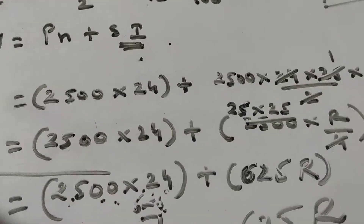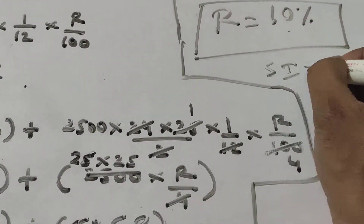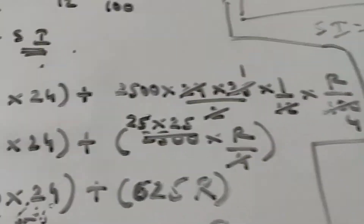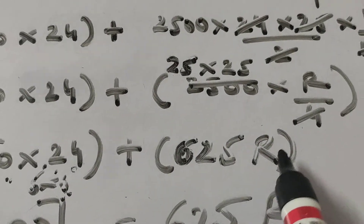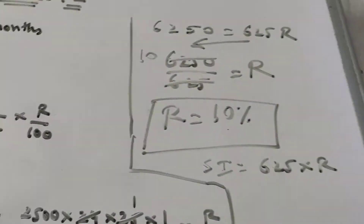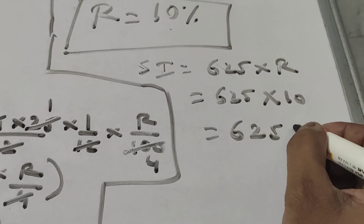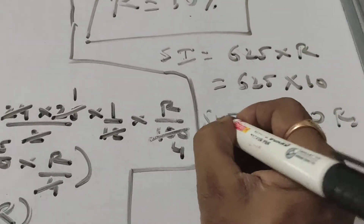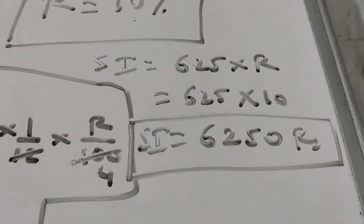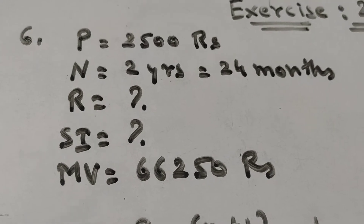We got r equals 10 percent. Now we still need to find the simple interest. We know from our earlier calculation that SI equals 625 × r. So SI equals 625 × 10, which gives us 6,250 rupees. So SI is equal to 6,250 rupees and the rate of interest is 10 percent. This sum is pretty simple — just a bit of basic knowledge and simple calculations are needed.